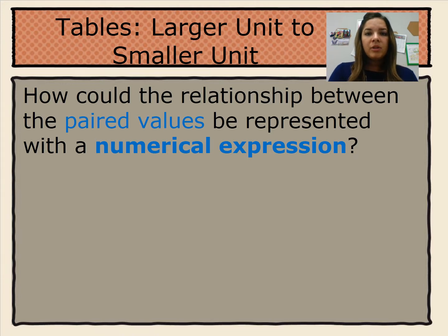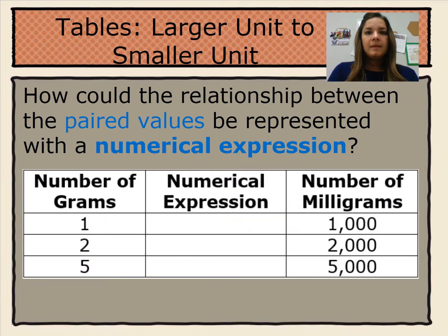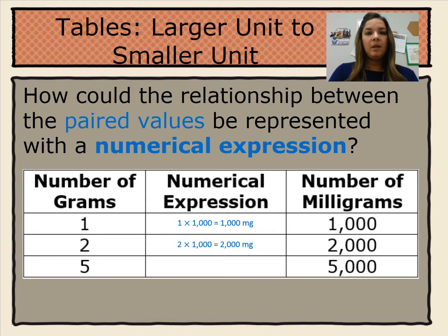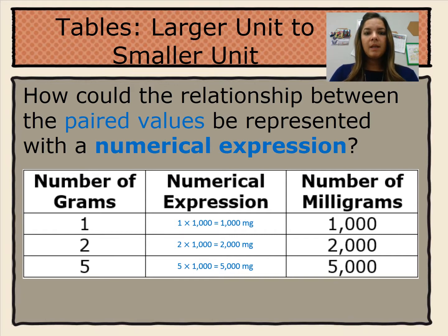Now we're going to look at a table where the relationship goes from a larger unit to a smaller unit. We're going to answer the question: how could the relationship between the paired values be represented with a numerical expression? The table is converting the number of grams to the number of milligrams. 1 gram equals 1,000 milligrams, 2 grams equals 2,000 milligrams, and 5 grams equals 5,000 milligrams. The numerical expression would be 1 times 1,000 equals 1,000 milligrams.